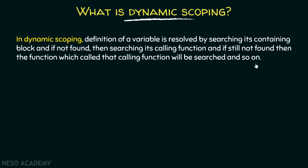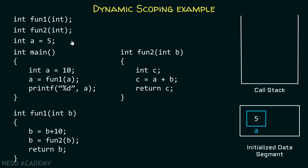Now let's consider one example which helps us understand dynamic scoping in better detail. This C program is exactly the same as the previous C program we have seen in static scoping — we will take the same example to understand the difference between static and dynamic scoping. Here we have two functions, fun1 and fun2, and this global variable finds its place in the initialized data segment. After that we have a main function, and since we are calling main, its activation record will get stored inside the call stack.